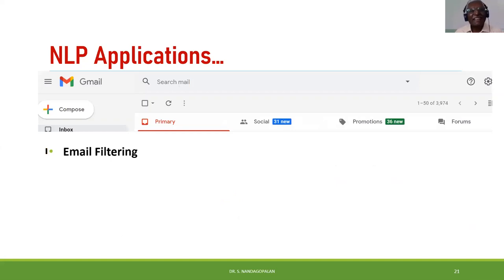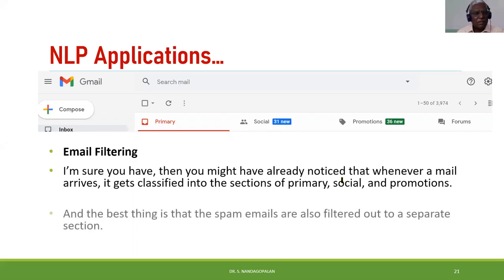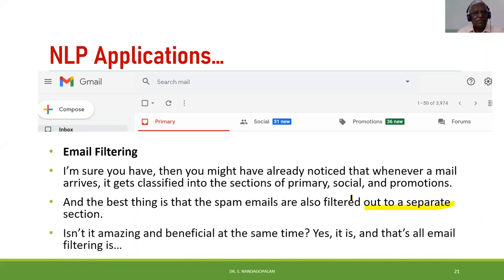Email filtering is another application — one you would have seen in Gmail, where incoming emails are categorized into primary, social, promotions, or forums. Spam is also automatically filtered. So a particular email can be classified into one of these categories automatically using NLP techniques.